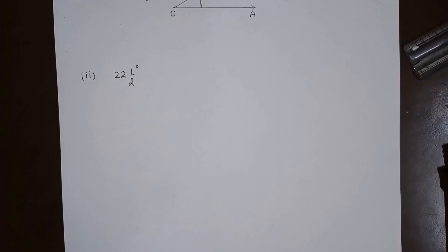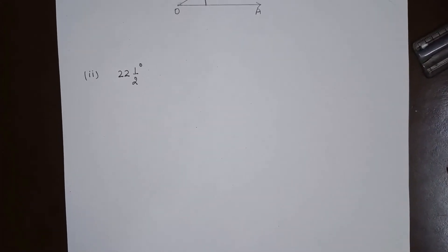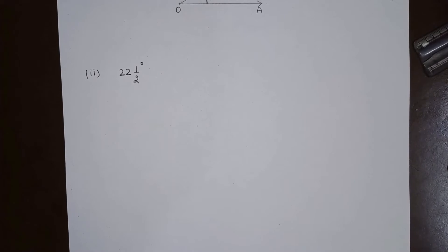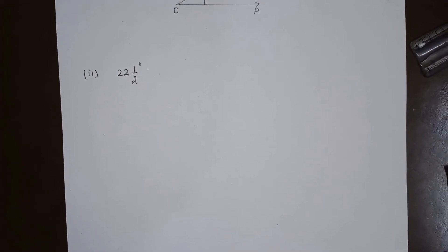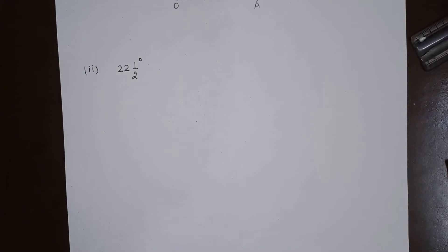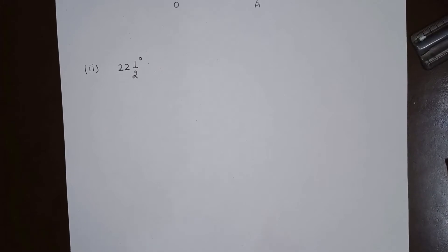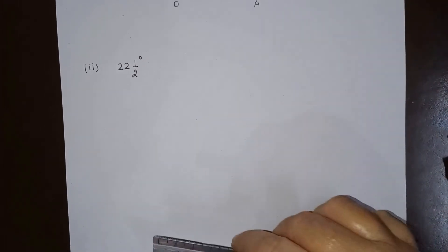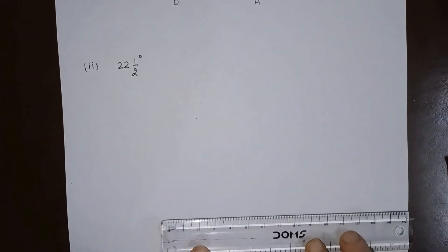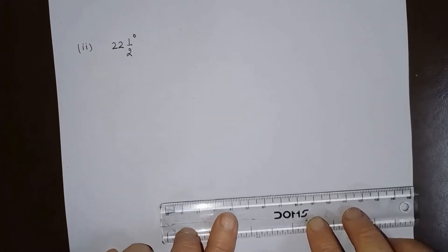Now let us make an angle of 22 and a half degrees. 22 and a half is half of 45 degrees, and 45 is half of 90 degrees. So we have to start by making an angle of 90 degrees first. Let us start.